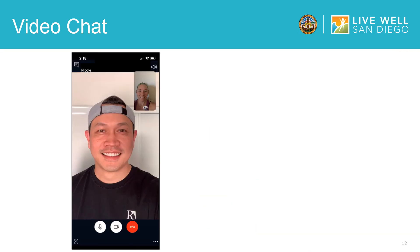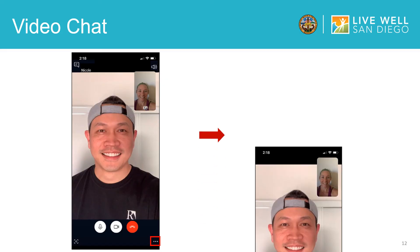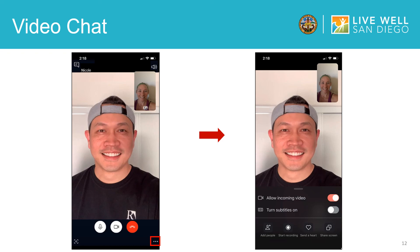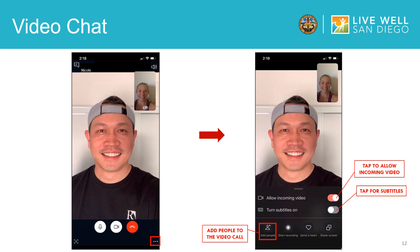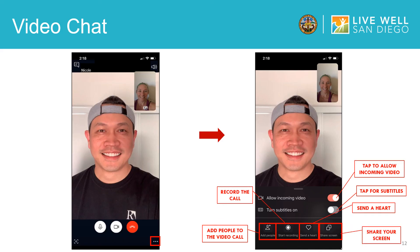When you select the three dots on the lower right hand corner of the screen, other video chat options will appear. You can choose if you would like to allow incoming calls or for subtitles to be on. Other functionalities include adding people to the video call, recording the call, sending a heart, or sharing your screen.